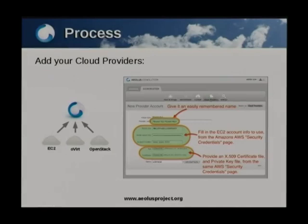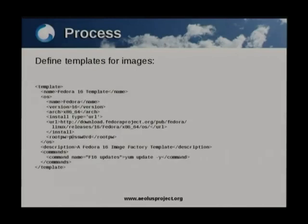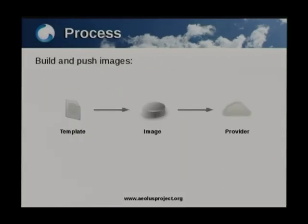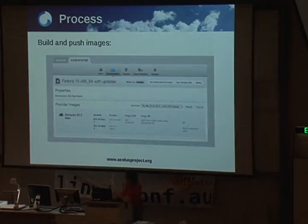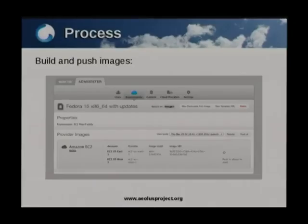The process is quite simple. Step one, you add your cloud providers - you might have an EC2 provider, an oVirt setup, or an OpenStack setup. It's just a matter of entering access details to ELIS. Then you define templates for your images. This is an example of a template definition file - it's a Fedora 16 base image that automatically updates upon creation. Then you build and push your template, building it into an image and pushing it out to your cloud provider. This is the UI for the build and push part for your images.